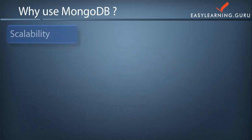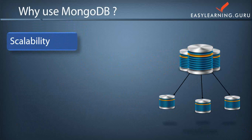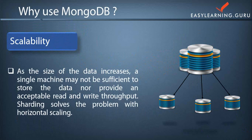The next feature is scalability. Scalability simply means meeting the demands of data growth. It is the ability of a system, network, or process to handle a growing amount of work in a capable manner. As the size of data increases, a single machine may not be sufficient to store the data or provide acceptable read and write throughput. Sharding solves this problem with horizontal scaling, and MongoDB provides you with horizontal scalability through sharding.